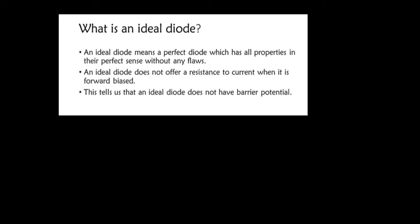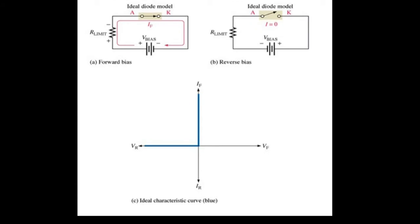The ideal diode doesn't have a biopotential, so this means it allows current to flow through it easily. We therefore say that it acts as a perfect conductor when it is forward biased. A perfect conductor doesn't offer any resistance to the flow of current. When the ideal diode is forward biased, it is a perfect conductor. But when it is reverse biased, it blocks all the current flowing through it.